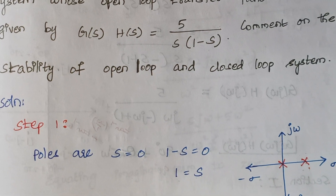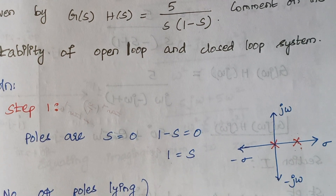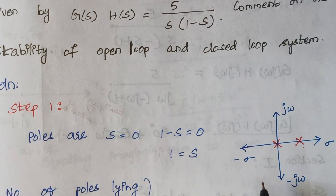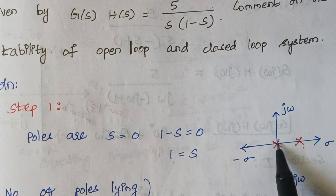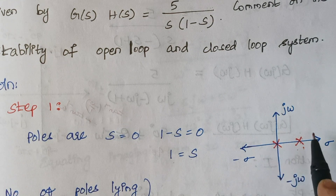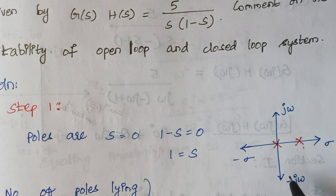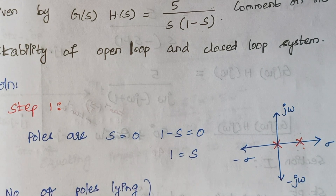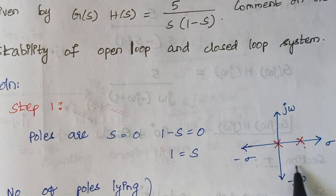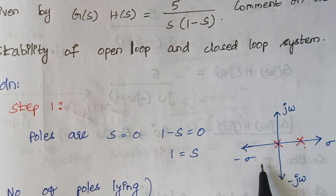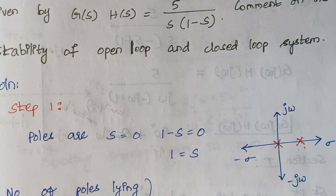Now we plot these poles on the S-plane. One pole is at s = 0 and another is at s = 1. Since s = 1 lies to the right of the imaginary axis, the number of poles lying on the right half of the S-plane is 1.